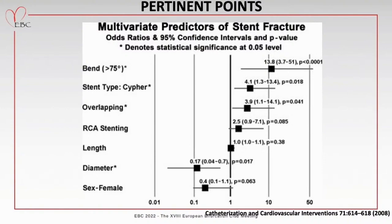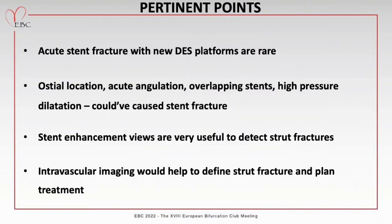Overlapping stents can induce axial stress along the vessel wall, and overlapped portions serve as hinge points for potential fracture. Stents in vessels with considerable motion during contraction, like the right coronary artery and saphenous vein grafts, are potential areas of fracture. Longer stents in smaller vessels can also lead to fracture. Clinical predictors include chronic kidney disease, hypercalcemia, and calcified lesions. Our patient was unique in that the stent fracture was recognized immediately after implant - predictors included nonstil location, acute angulation, overlapping stents, and high-pressure dilatation.